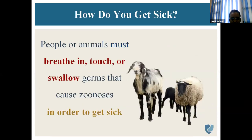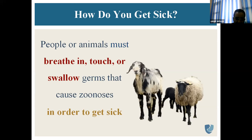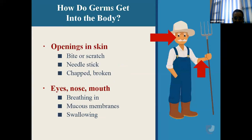People or animals must breathe. For infection to occur, the pathogen should get entry into the body — by breathing in, touching, or swallowing germs that cause zoonosis. Pathogens can enter through openings in the skin, bites or scratches, needle pricks, chapped or broken skin, mucous membranes of eyes, nose, mouth, breathing in, and swallowing.